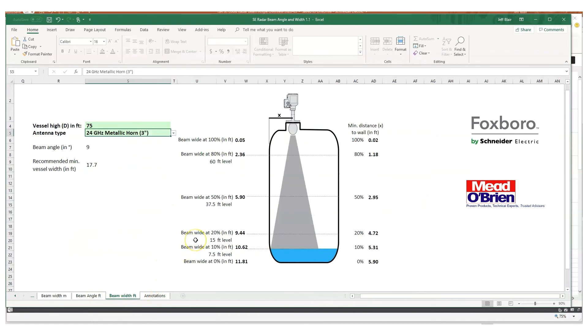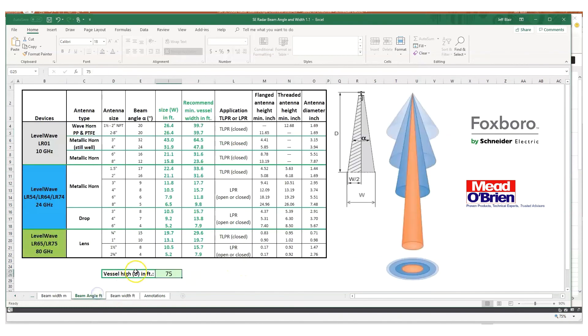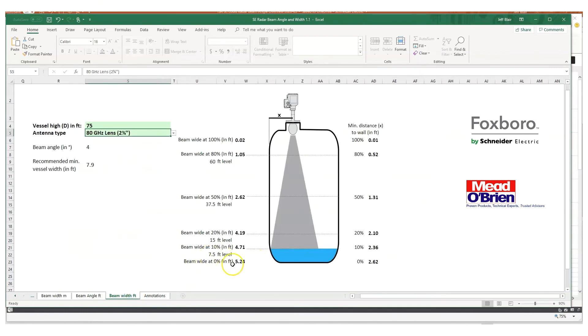So back to the, if you remember the nozzle and the valve we looked at, we could actually figure out if we plugged in 75 feet and we wanted to go with the most narrow beam we could find, that would be an 80 gigahertz with the two and three quarter inch lens. We've got our four degree beam angle. So it's 75 feet all the way at the bottom of the tank. If you remember, if we had 5.2 here, we could see 5.2 feet. That's how big that beam is going to be at the bottom of the tank. At 50 percent high, it's going to be 2.62 feet. At 80 percent high, it's going to be just a little over a foot.